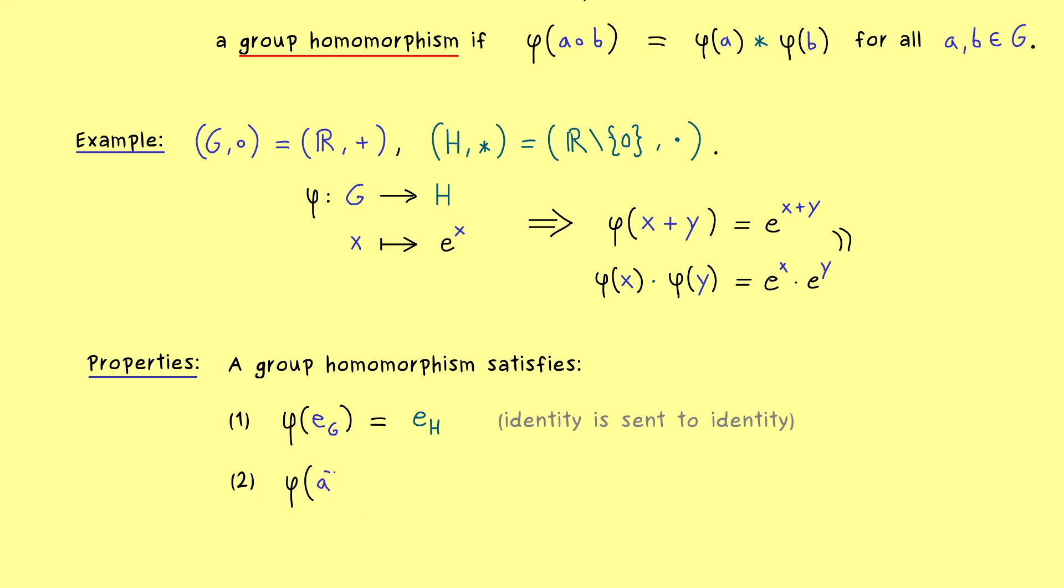And to describe the second property, we want to put in an inverse. And here we want to have the same as before. It should not matter if we first apply φ and then the inverse, or the other way around. This means, φ of a inverse should be given as φ(a) inverse. And obviously, we want to have that for all a in G. So these are the two important properties, that we could also have included in the definition above.